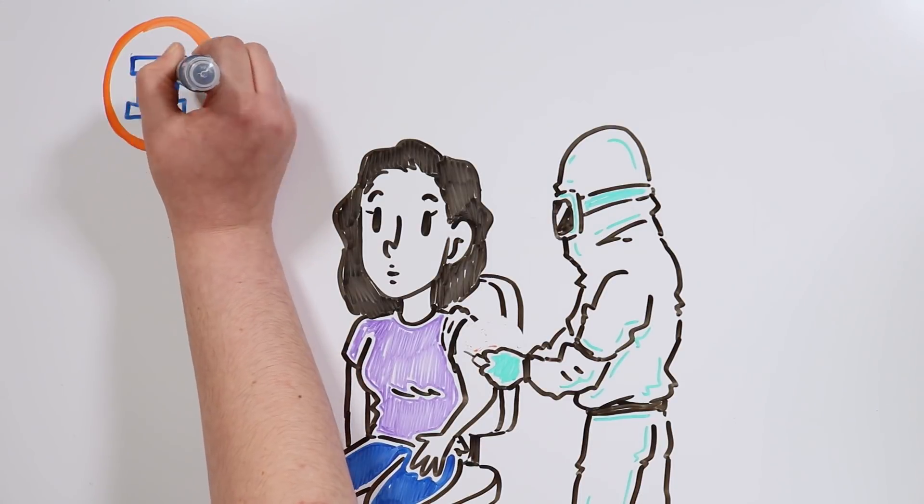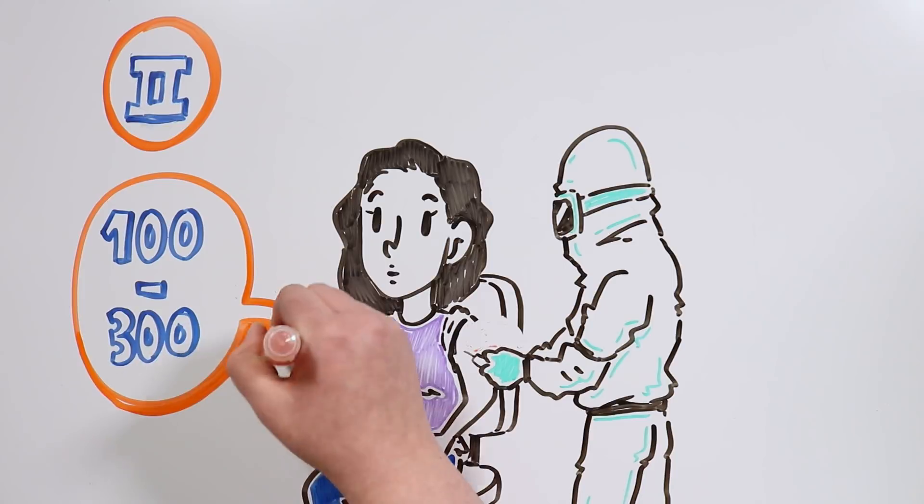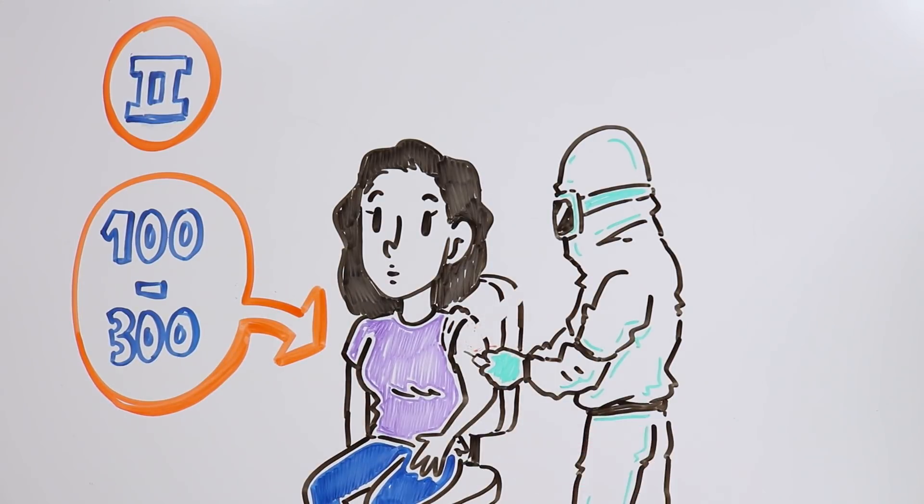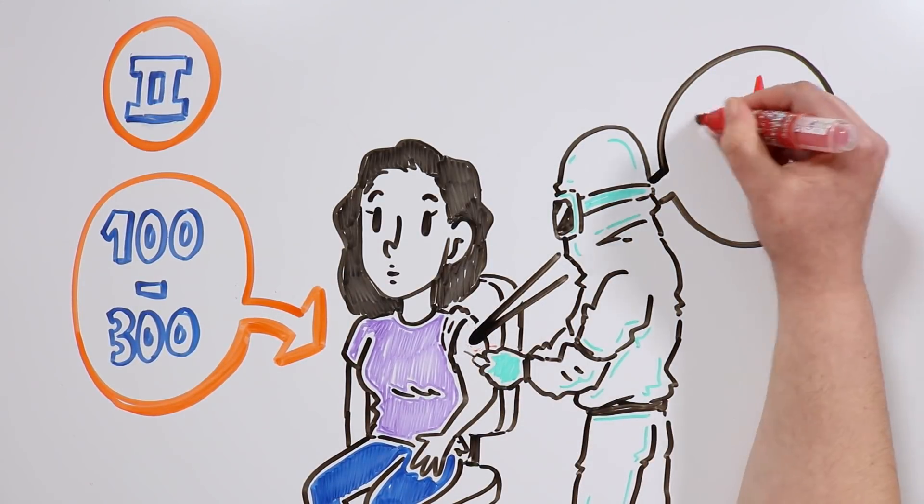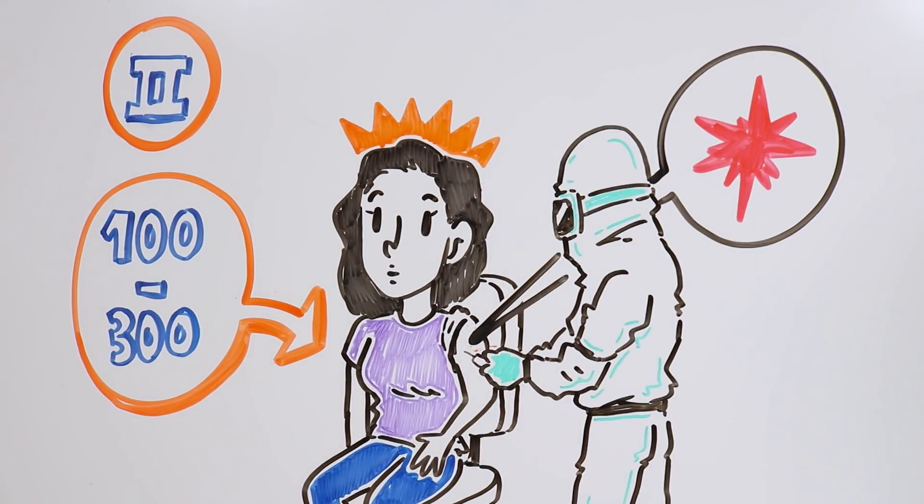In phase 2, the vaccine is injected to a higher amount of people, between 100 and 300. Here, they evaluate if the vaccine has side effects in the short term and also evaluate how the human body reacts to that substance.